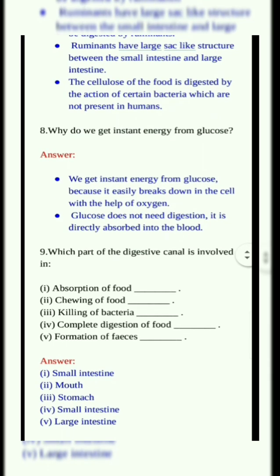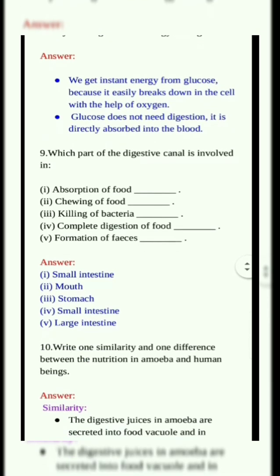Ninth question. Which part of the digestive canal is involved in: 1. Absorption of food — Small intestine. 2. Chewing of food — Mouth. 3. Killing of bacteria — Stomach. 4. Complete digestion of food — Small intestine. 5. Formation of feces — Large intestine.